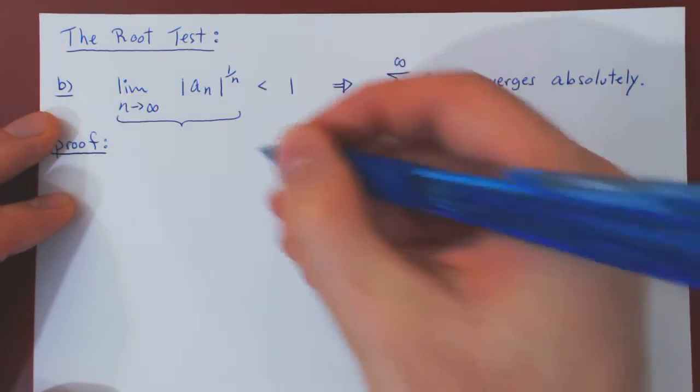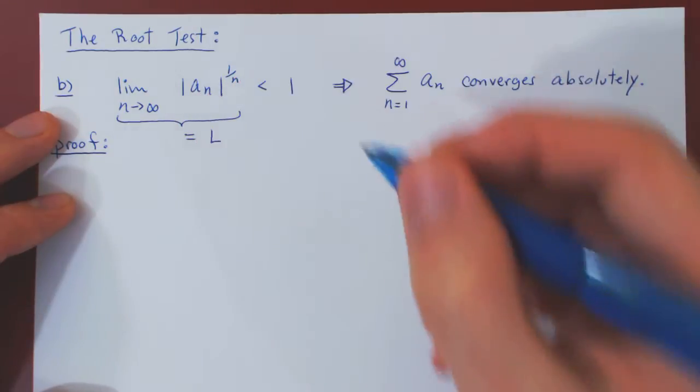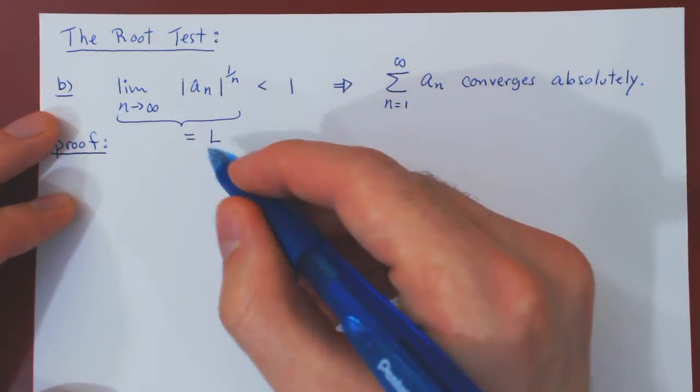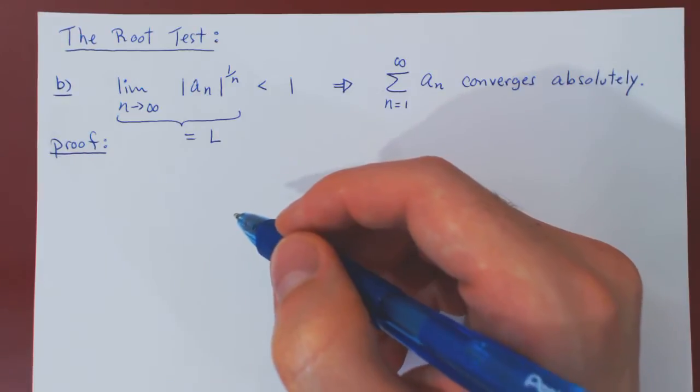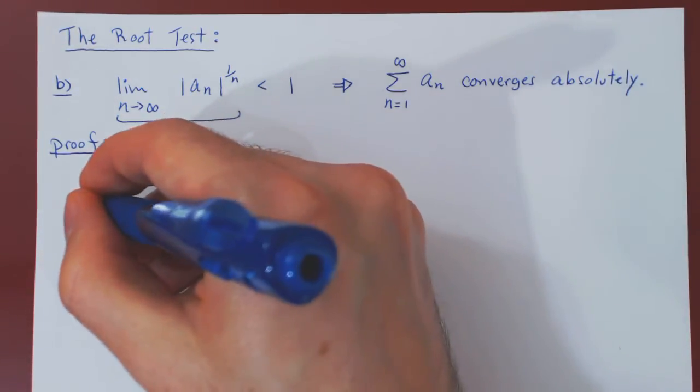Suppose that the limit of our expression is equal to L. What we're seeing is L is strictly less than 1. So let's visualize this onto our real line.